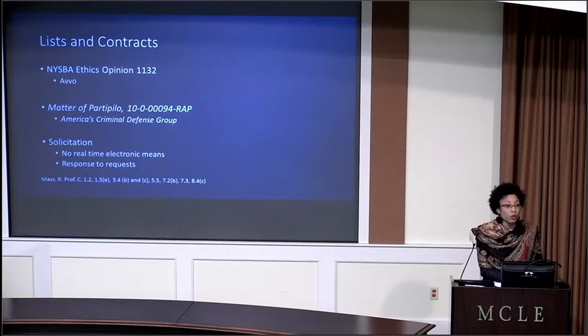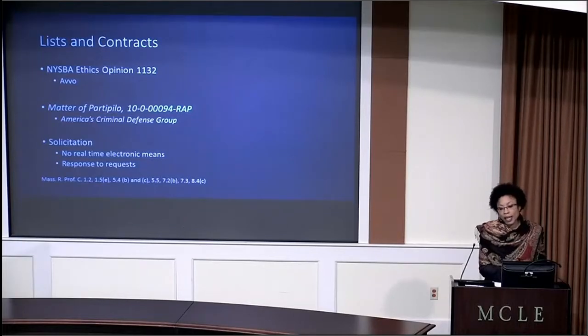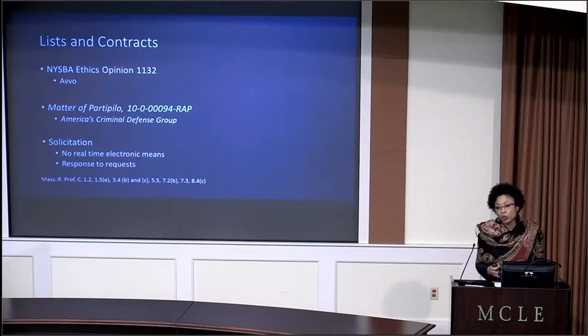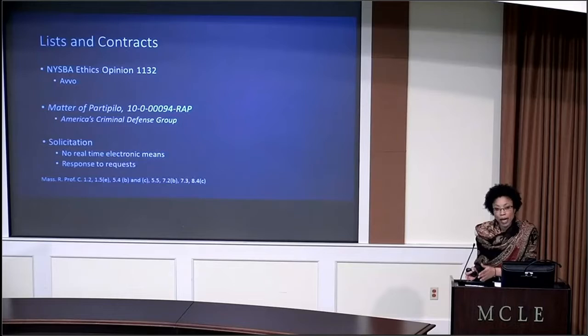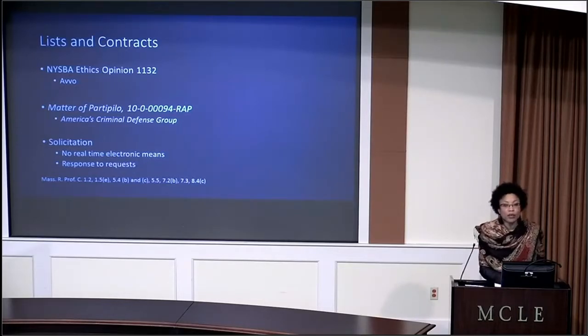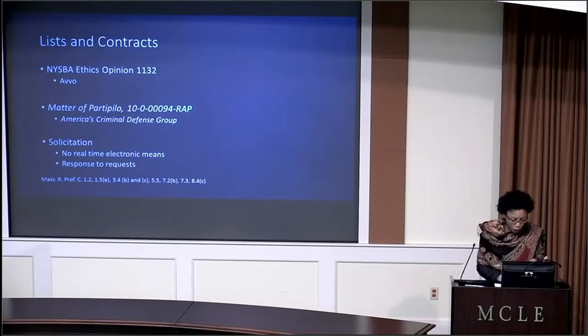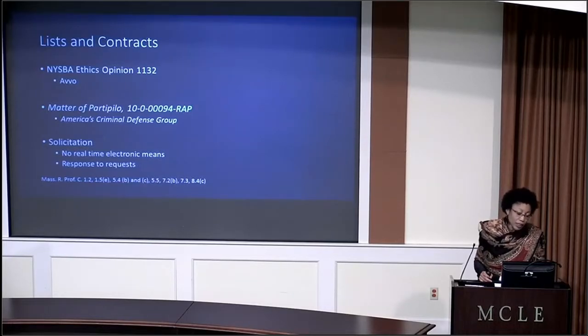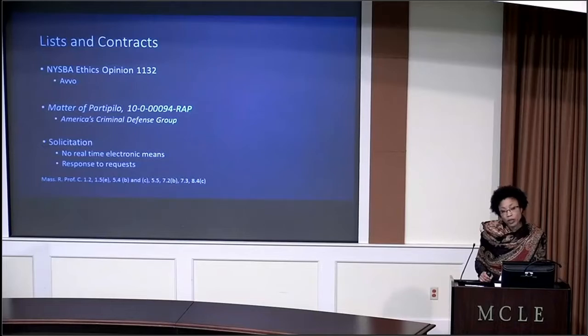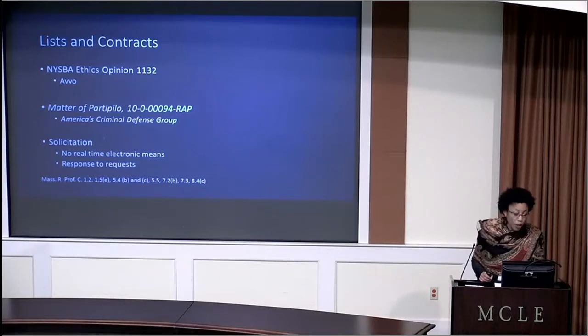So one of the things that you may be aware that Avvo does is it asks a lawyer to claim a profile to provide additional information about the lawyer, and that improves the rating of the lawyer. So, for instance, if you went on Avvo and you looked for Stacy Best, what you would find is that my practice area is unknown, and a sentence or a statement that would sort of urge you to look for someone else that Avvo might know a little bit more about. And so here we begin to get into the area of concern with respect to ethics. So I would take your attention to Rule 7.2(b) in Massachusetts, and I believe it's 7.2 also in the New York Opinion.